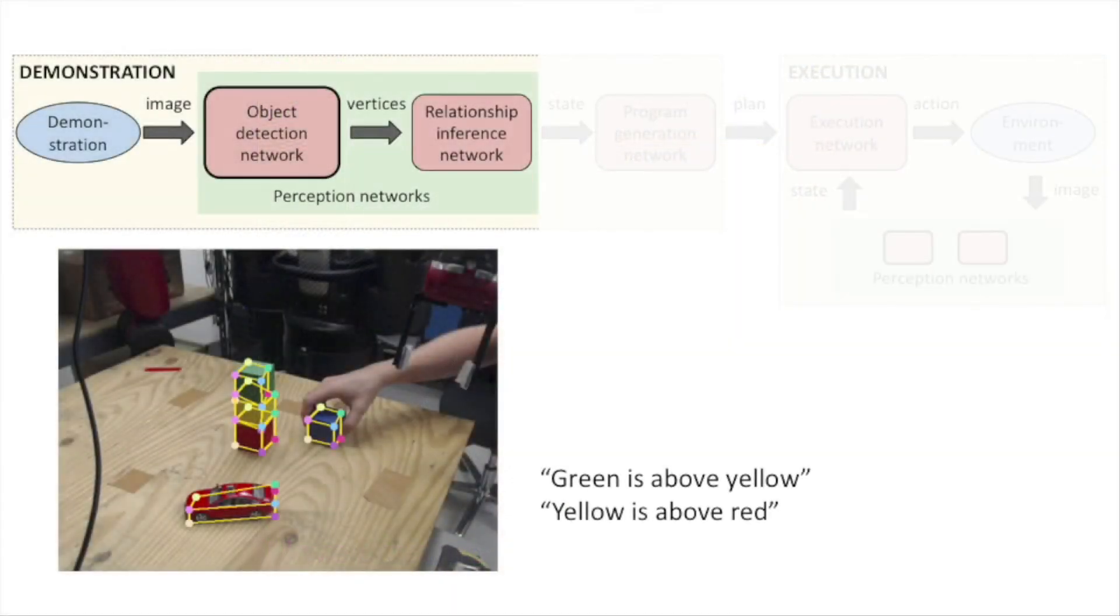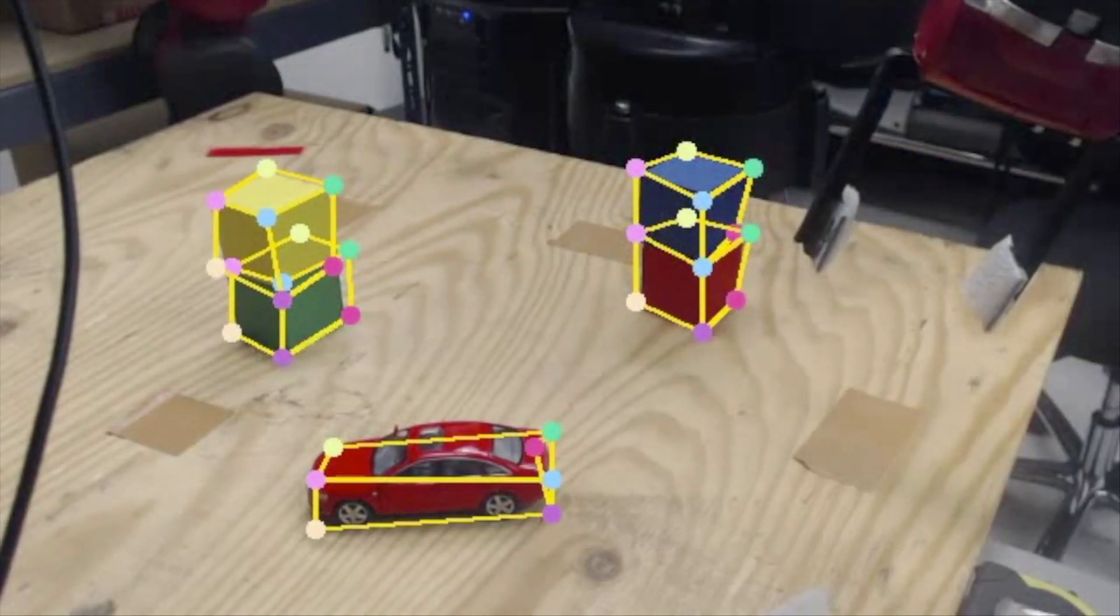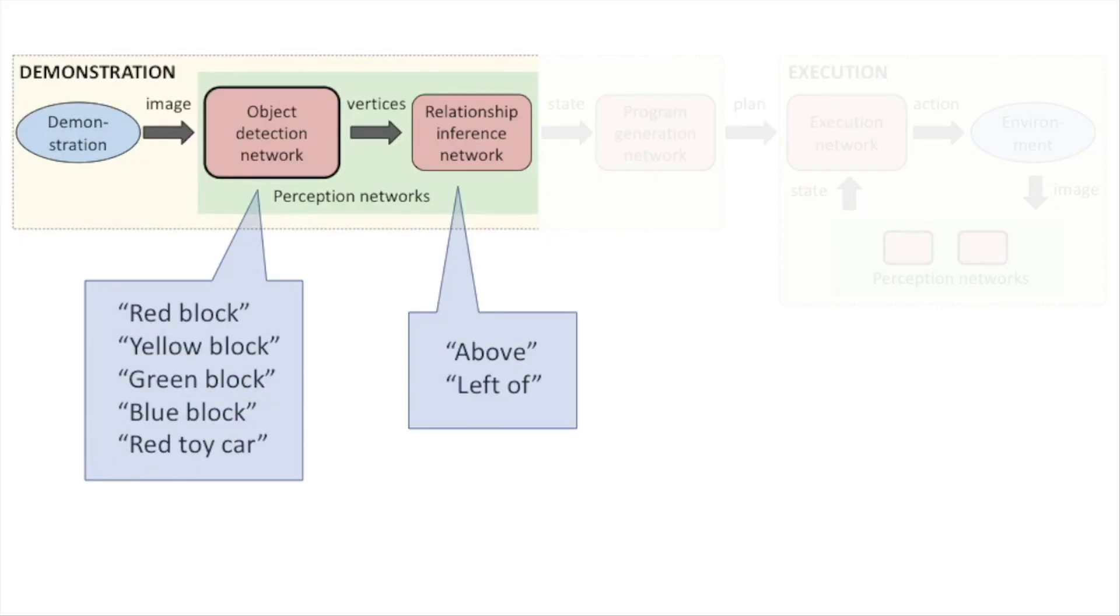Together, the set of object detection and relationship networks define the vocabulary of the human-readable programs. In our implementation, we trained object detectors for several blocks and a toy car. We trained the relationship network for two physical arrangements: above and left of.